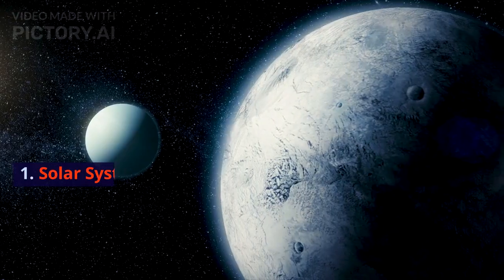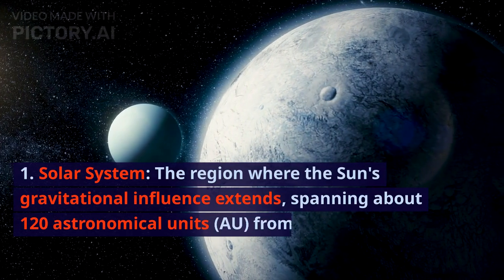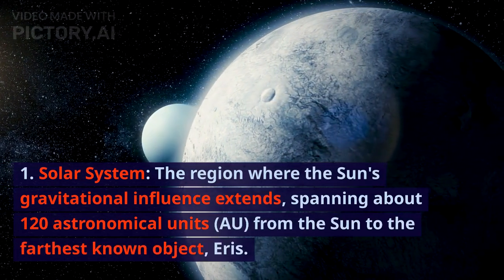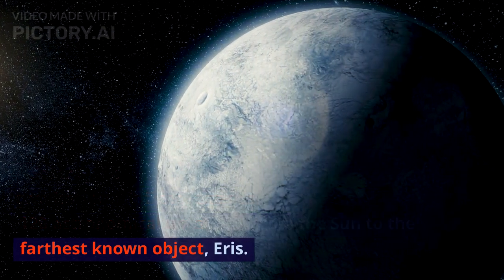Solar System: The region where the Sun's gravitational influence extends, spanning about 120 astronomical units (AU) from the Sun to the farthest known object, Eris.